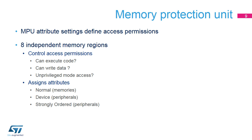The MPU is also in charge of assigning attributes to regions called normal, device, and strongly ordered. Normal is used to map memories, while device and strongly ordered are used to map peripherals. The difference between them is the capability to buffer data. The device memory attribute enables write posting, while a store to a strongly ordered region stalls the pipeline until the response is received from the targeted peripheral.